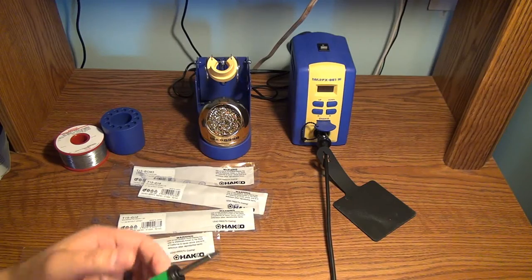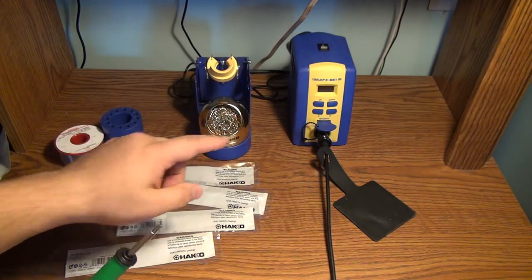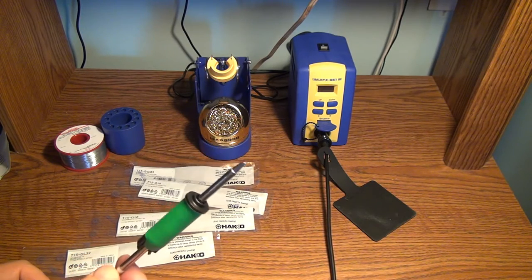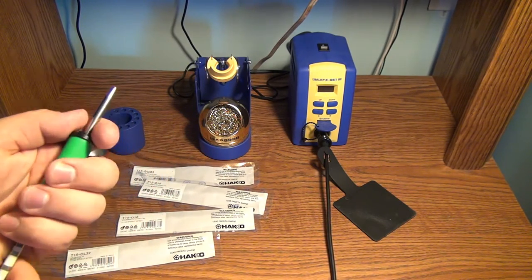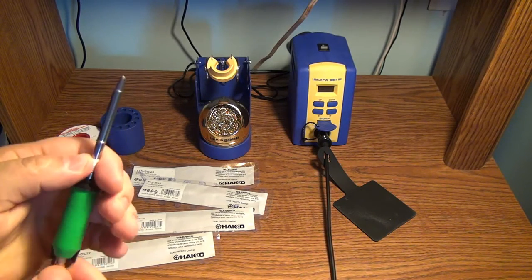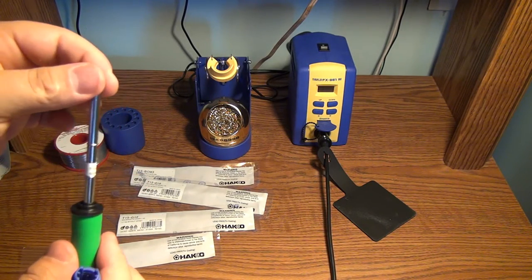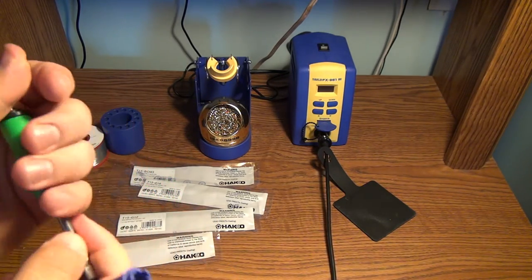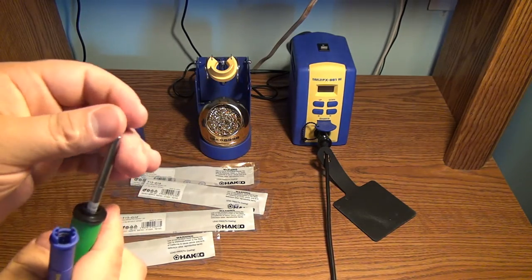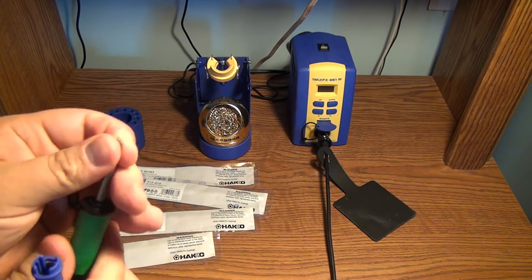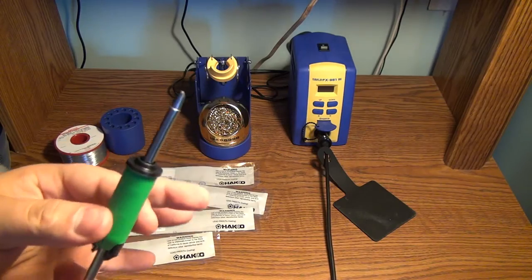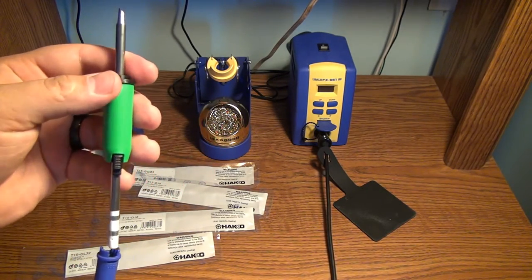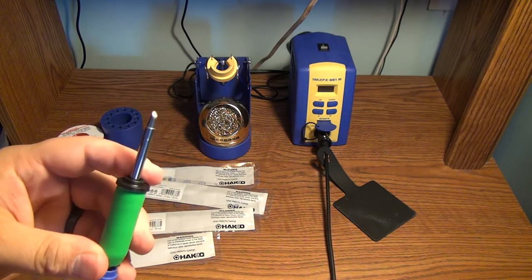So something specific to note is you saw the station just threw an error. The SE error stands for the tip. This is something I was neglectful in, and that is whenever you put tips in, you insert the tip into the collar. Did you hear that click? That click signifies that the tip is fully seated in the collar, and that's the step I was missing.